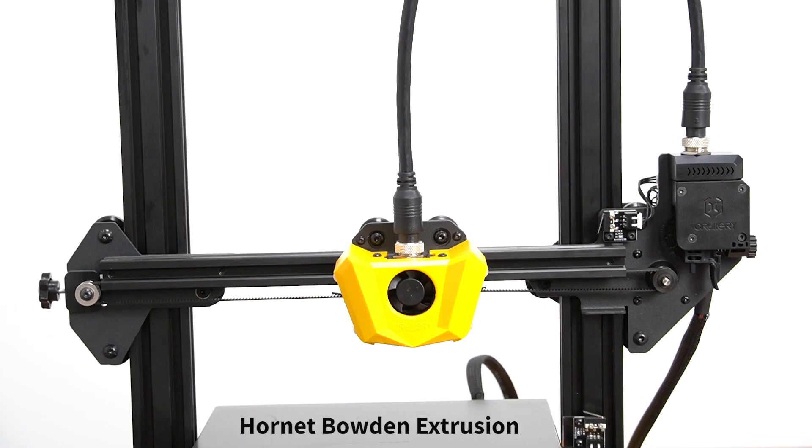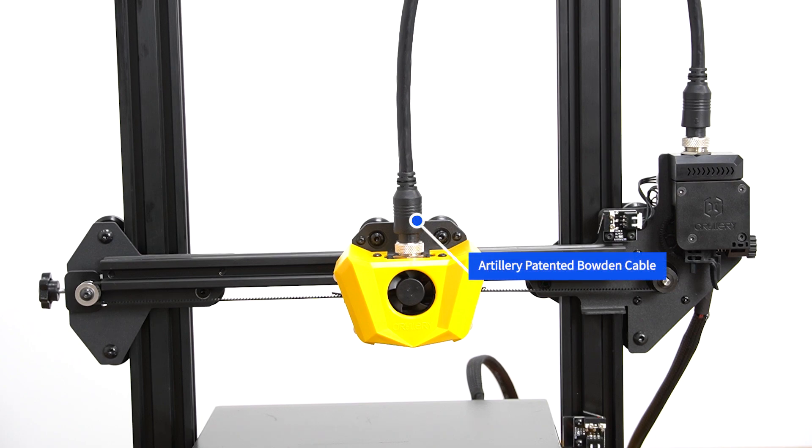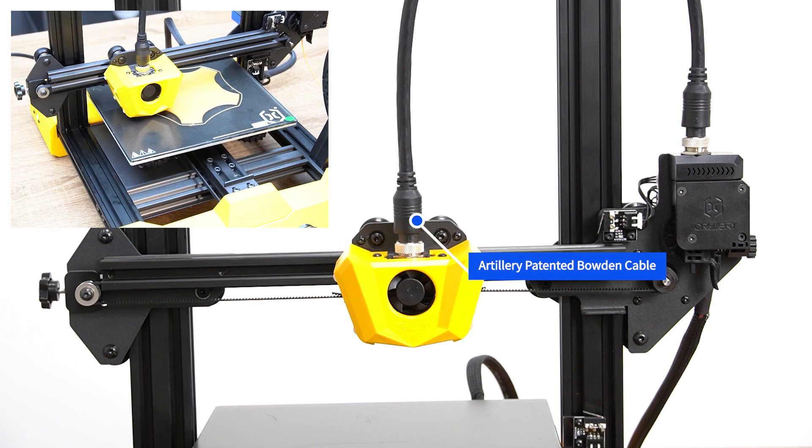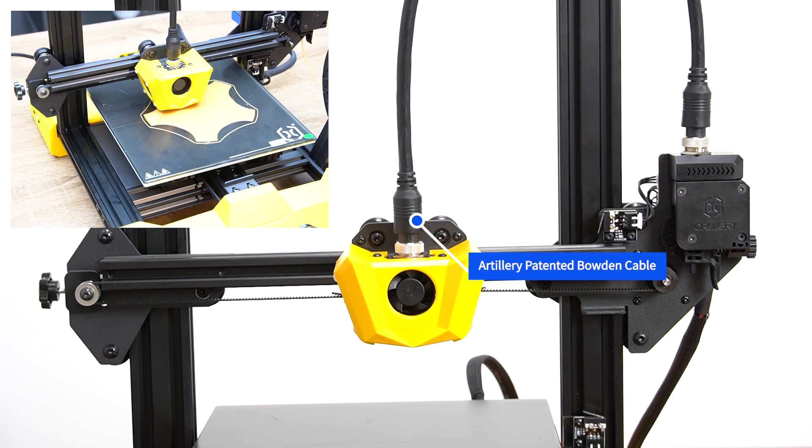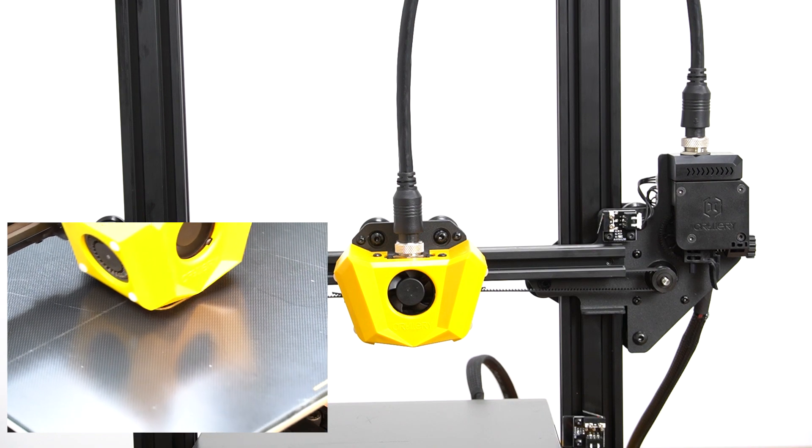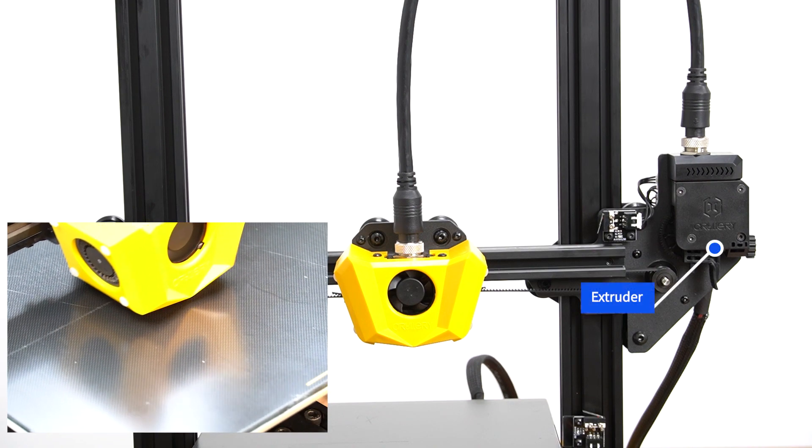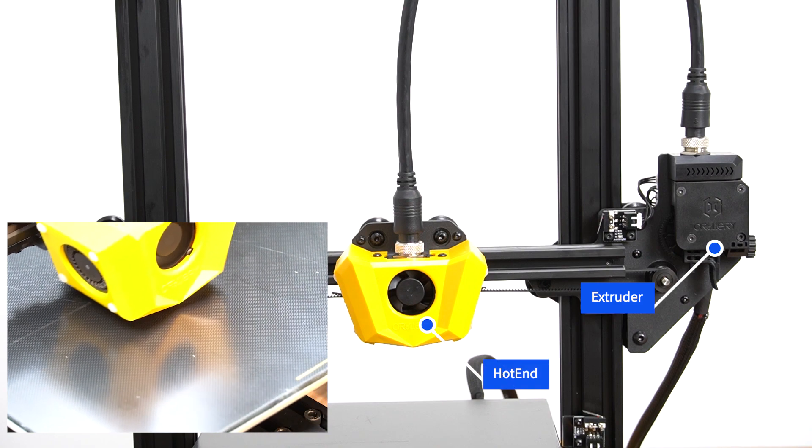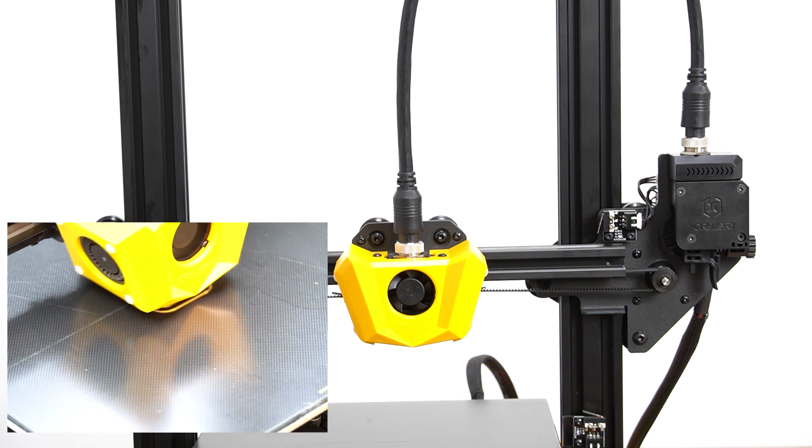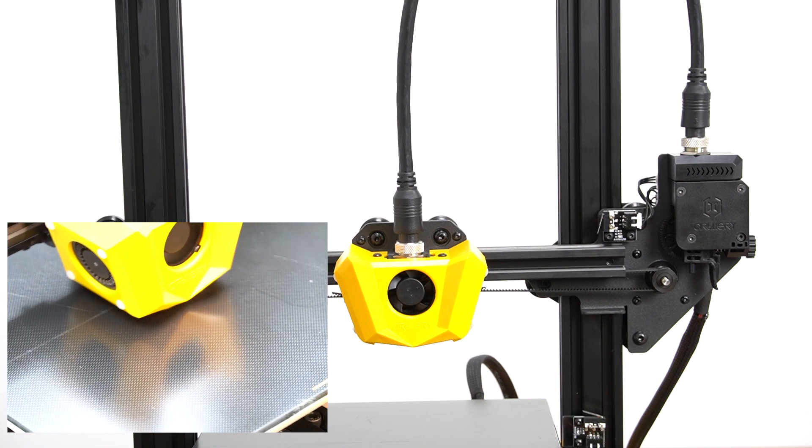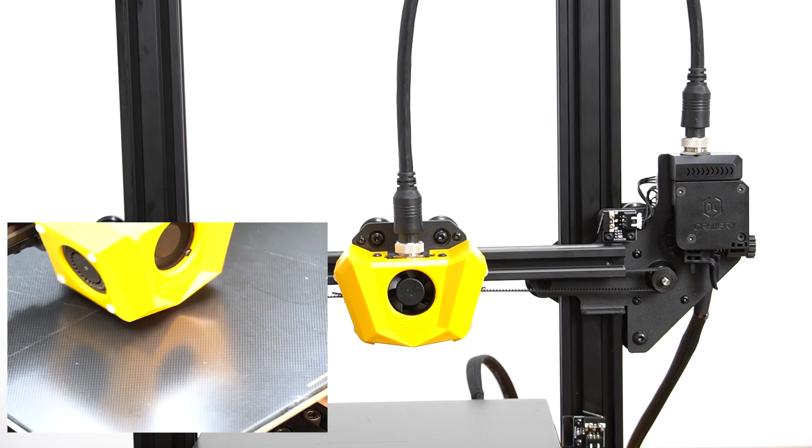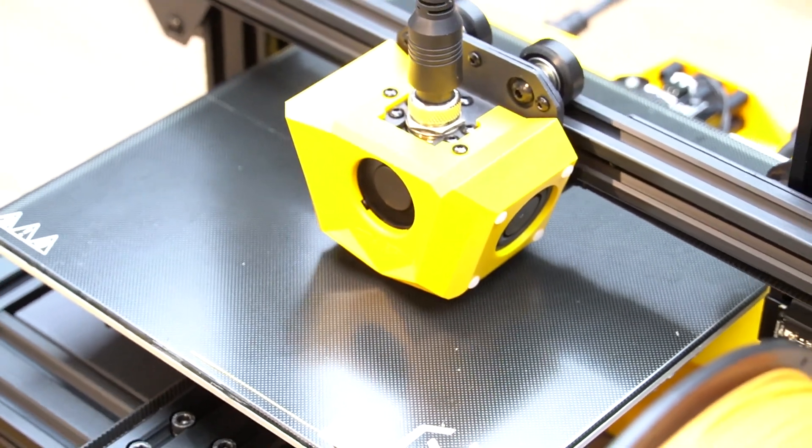In this video we are going to talk about the Artillery Hornet board and extrusion system. Unlike the other two models, Sidewinder and Genius, which use direct extrusion, we are going to disassemble and assemble the Bowden extruder and hot end to have a better understanding of the components and the process of putting them together in case you face clogging issues or need to replace a part in the extruder or hot end.